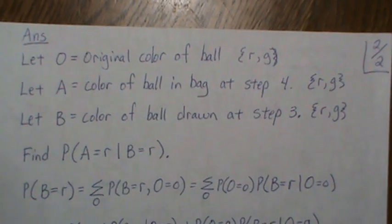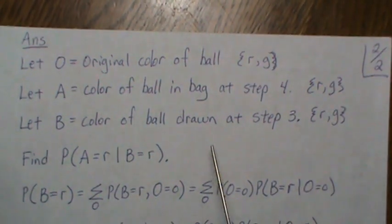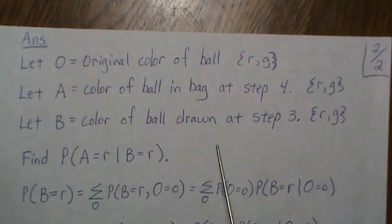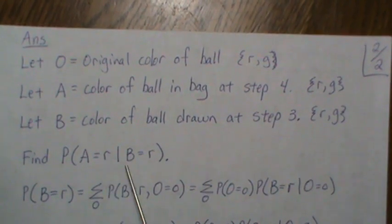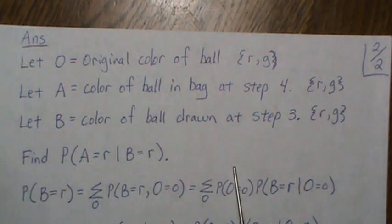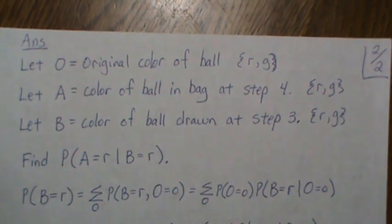We need a couple calculations before we go through this. Since this is a conditional probability, we want to find the intersection of these. Probability of A is red and B is red divided by the probability that B is red. So we're going to find these pieces.